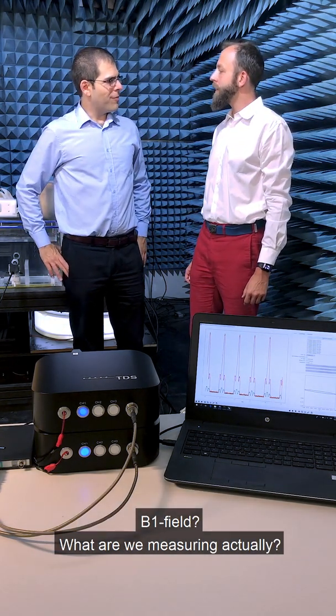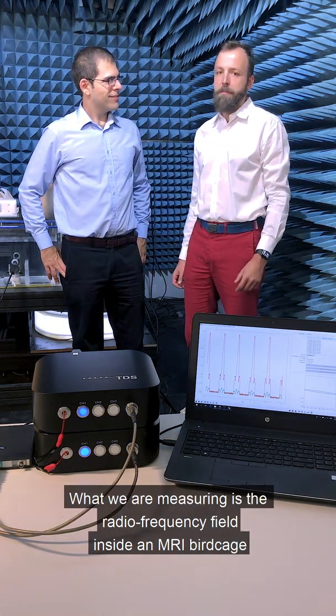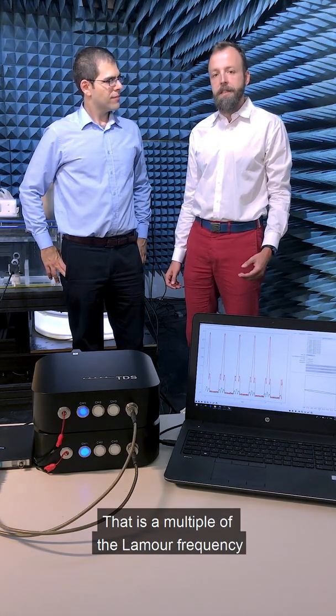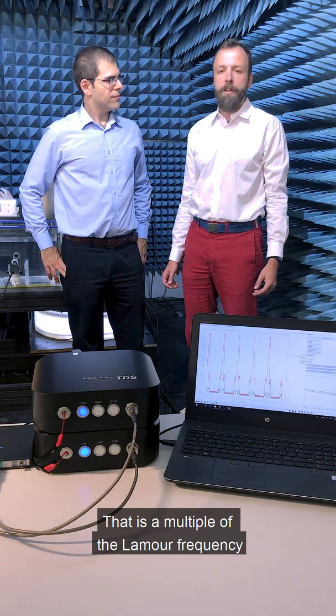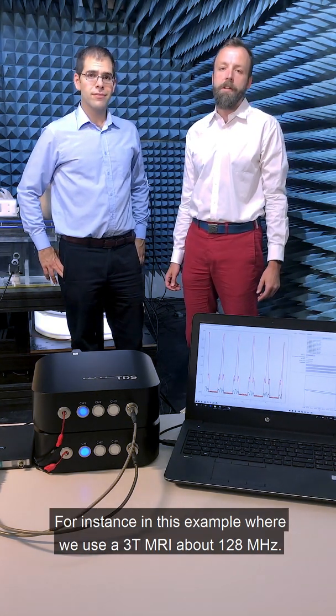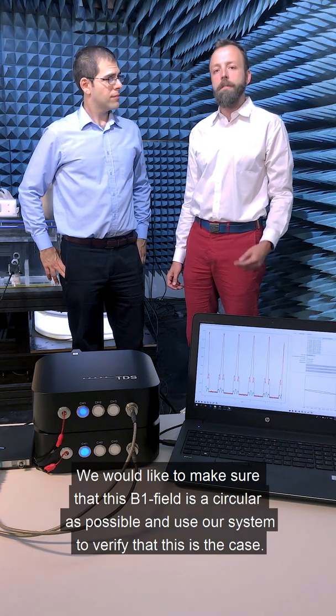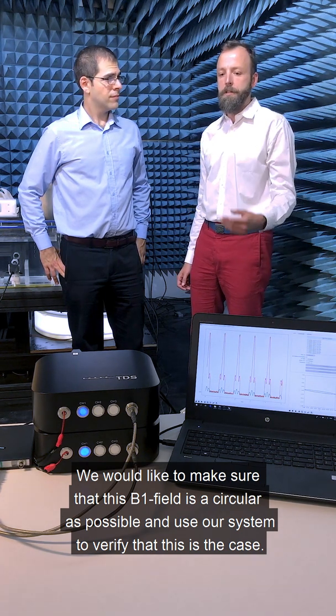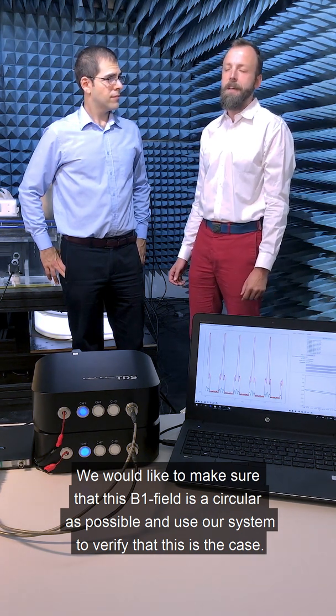So Sven, B1 field, what are we measuring actually? So what we are measuring is the RF field inside an MRI birdcage. That is a multiple of the Larmor frequency. For instance, in this example we are using a 3T MRI about 128 MHz and we would like to make sure that this B1 field is as circular as possible and use our system to verify that this is the case.